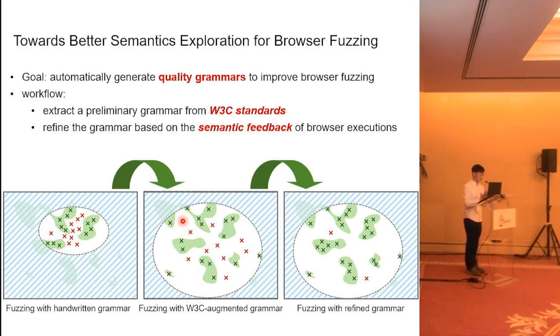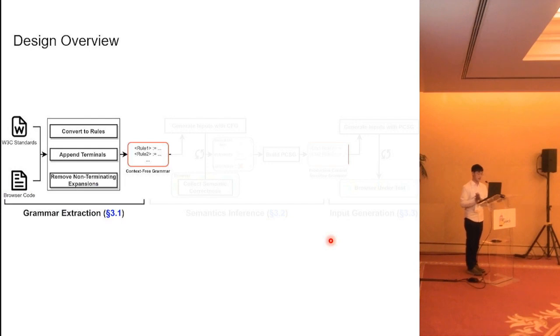The goal of our paper is to automatically generate quality grammars to improve browser fuzzing. Our key insight is to build input grammars based on W3C standards, which describes input specifications of browsers in natural language. Our workflow is that first, we extract a preliminary grammar from W3C standards to broaden our search space, but it is inevitable that the grammar introduces some semantic errors. So we also have a process to refine the grammar based on semantic feedback from browser executions. As a result, our fuzzer can efficiently explore the input space.